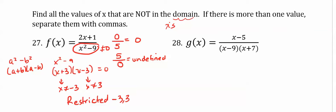In our next example we have g(x) equals x minus 5 divided by x minus 9 times x plus 7. Again, because it's a fraction we cannot divide by zero. It doesn't matter that we have an x on top - it's okay to have zero on top. The denominator is where we see the issues.